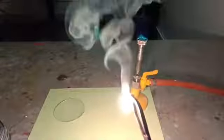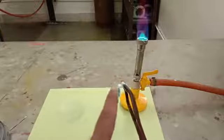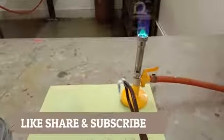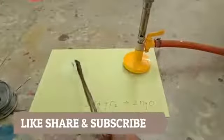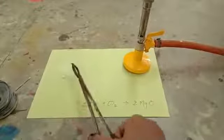As you can see that magnesium burns with a dazzling white flame. Now as the reaction is completed you can see that this white color thing is being produced. This white color is nothing but magnesium oxide.